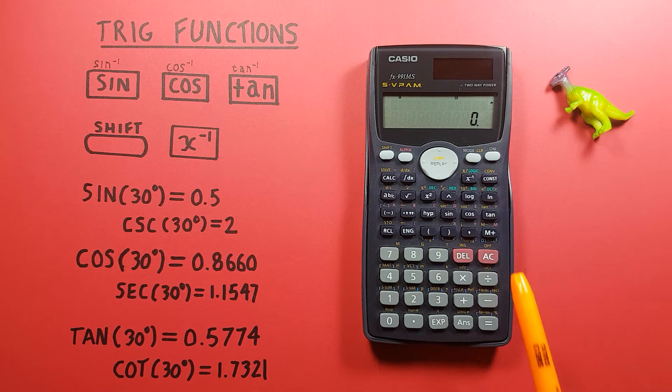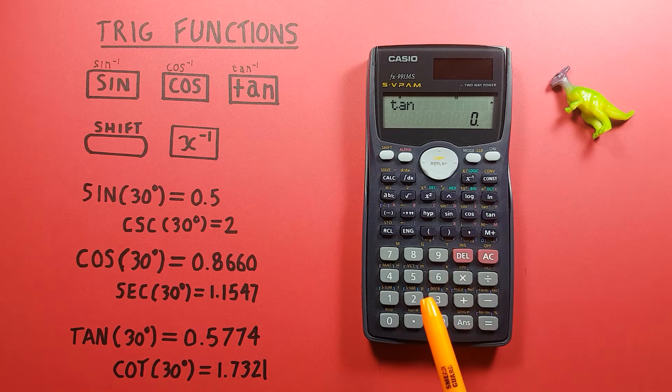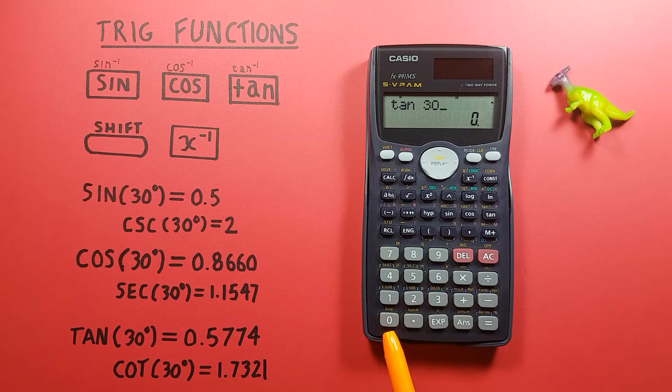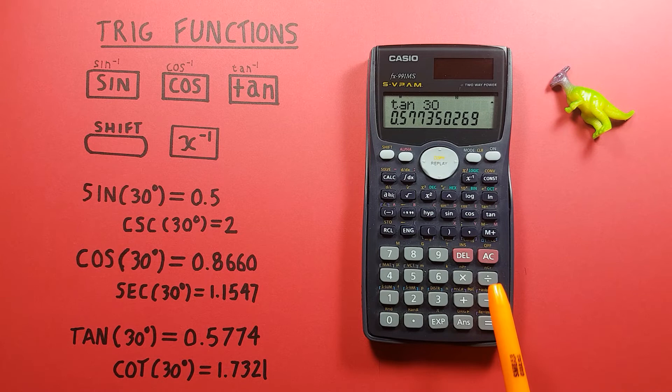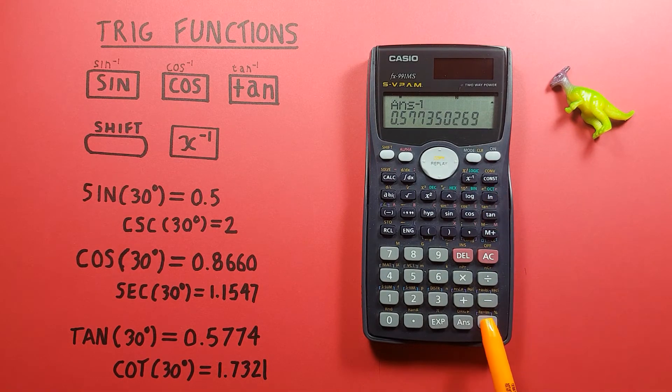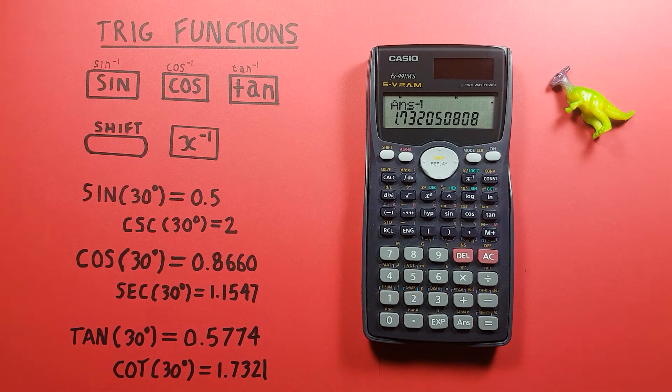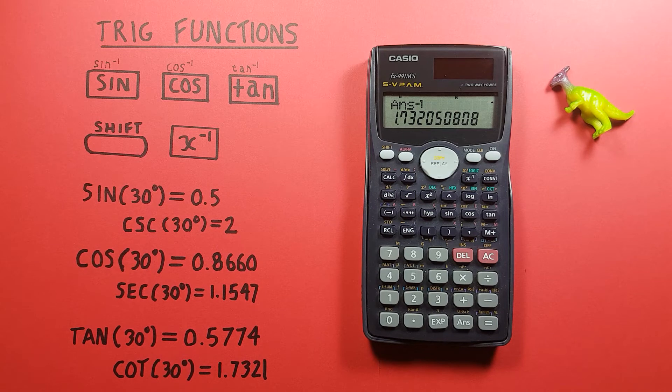And with tangent, tan of 30 equals, inverse that to get our cotangent which is 1.7321.